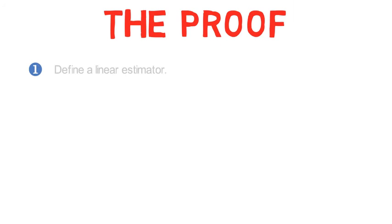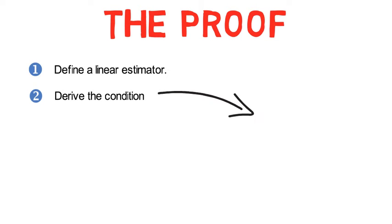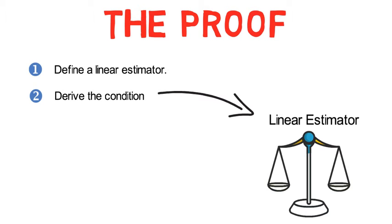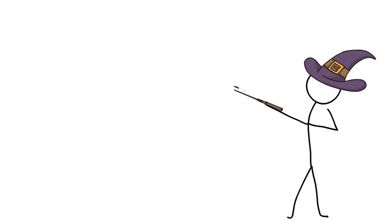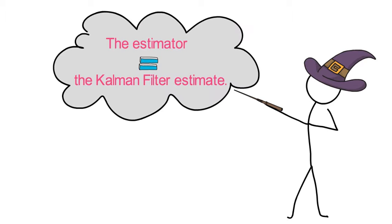The proof works as follows. First, we define what is a linear estimator. Second, we derive the condition so that linear estimator is unbiased. Third, we derive an additional condition so that the linear unbiased estimator has minimum variance. And voila! We will see that the respective estimator coincides with the Kalman filter estimate.